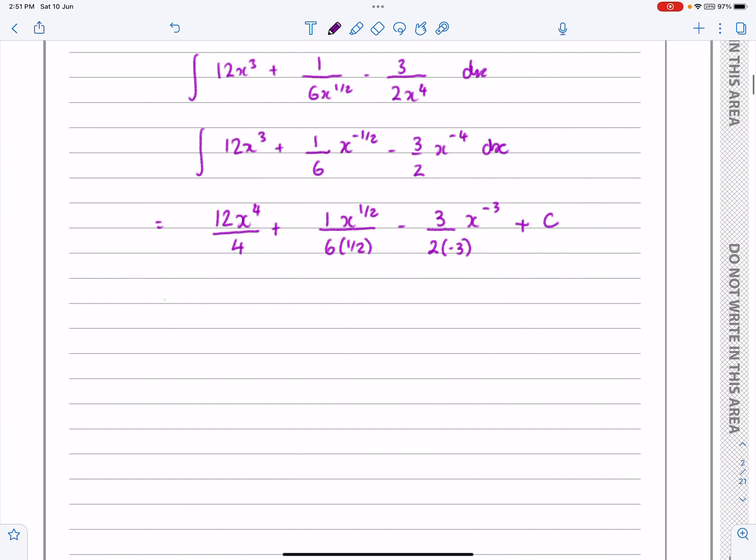And now we just need to tidy this all up. So this is 3x to the 4. This is x to the half over 3, and this is 1 over 2, x to the minus 3, and the minus makes that into a plus, plus our constant.